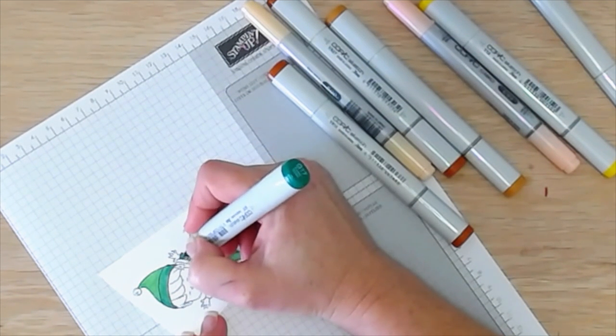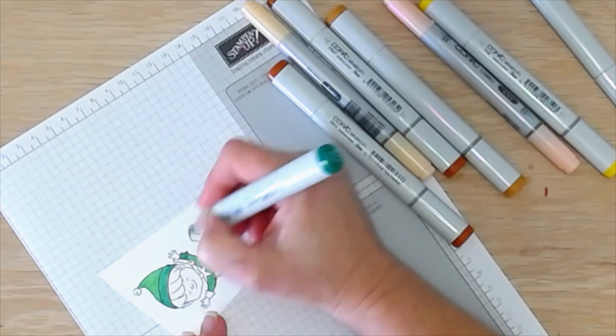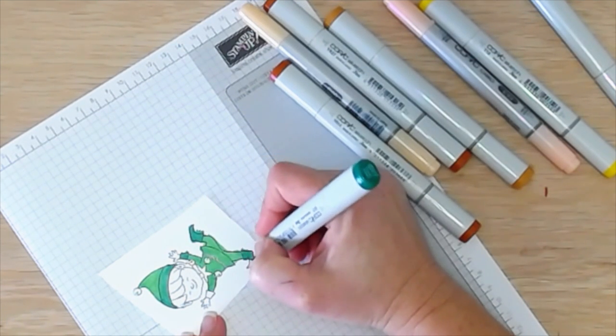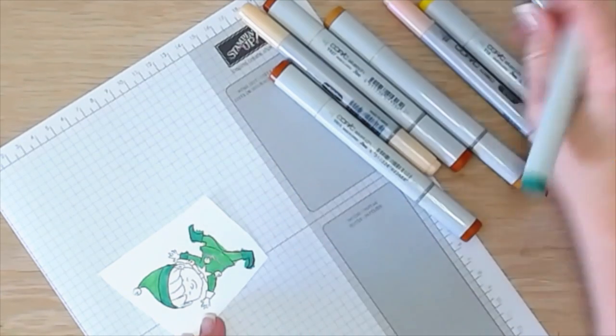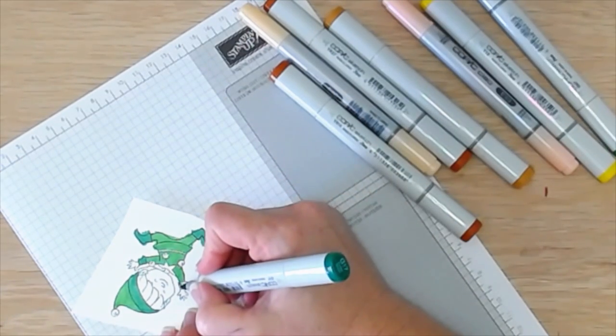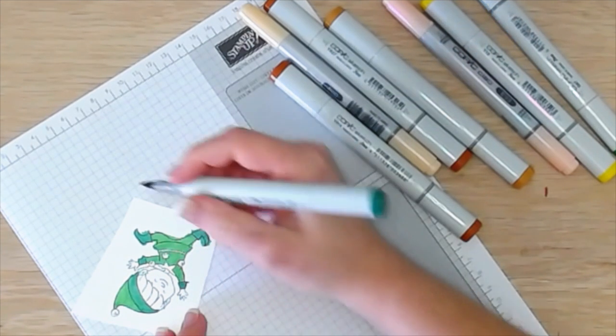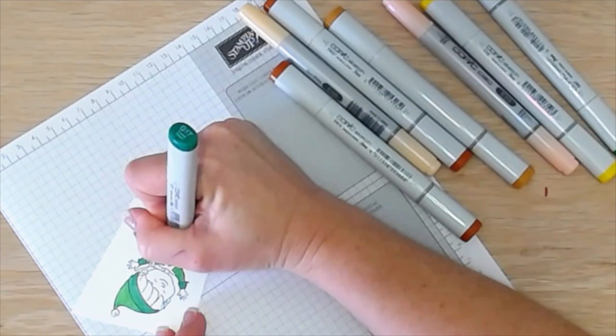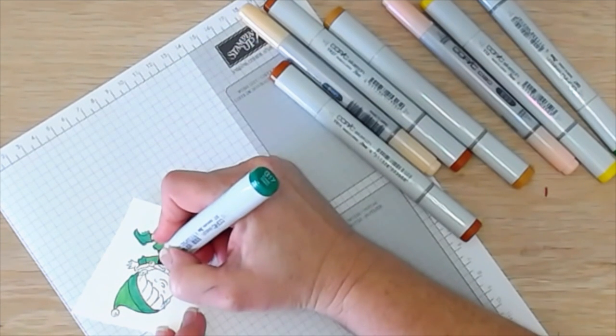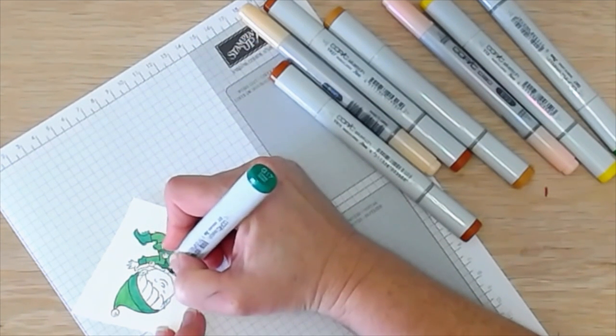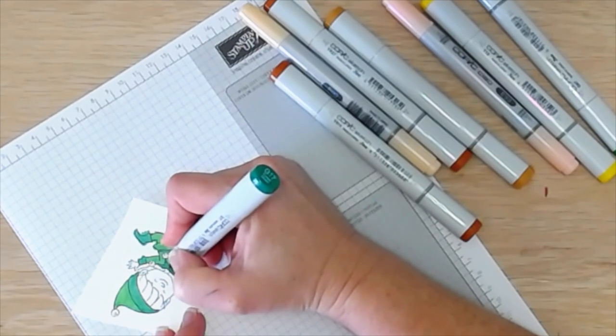I thought you might want to know what colors I was using. So I'm using a G17 and G07 for the elf's little costume here. Just a little bit darker green on the trim and the shoes of his outfit and around his neck here. And as you can see, I'm not doing any blending or anything. I'm simply just coloring.